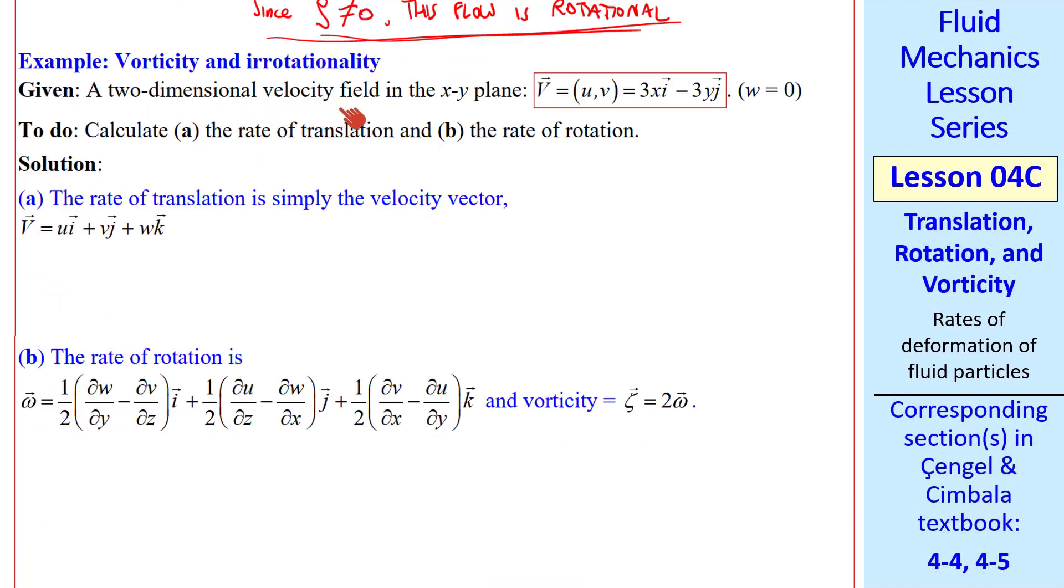Again, we have a two-dimensional velocity field. With this velocity vector, we're asked to calculate the rate of translation and the rate of rotation. Well, the rate of translation is just the velocity vector, so the answer is already given up here. V equal 3xi minus 3yj, or the components are u equal 3x, v equal negative 3y, and w equal 0.